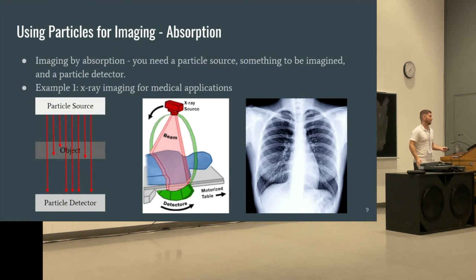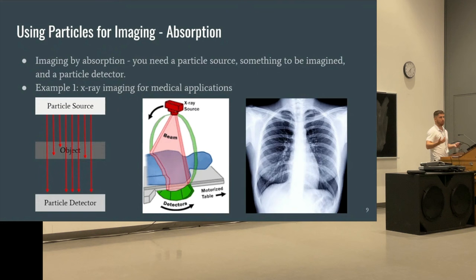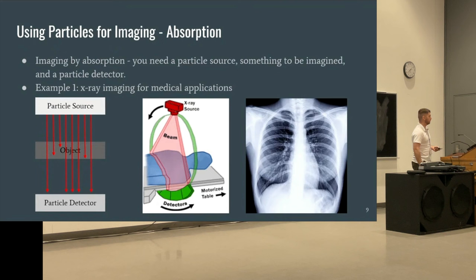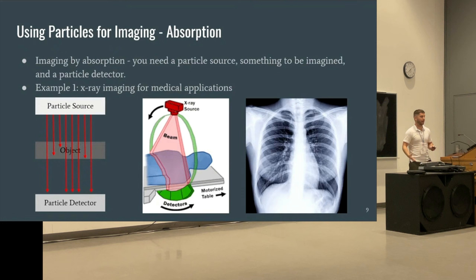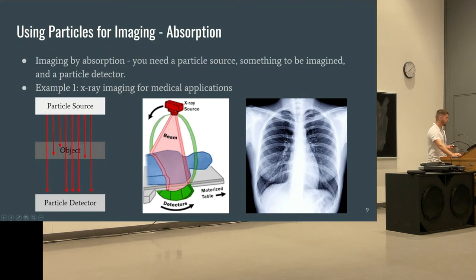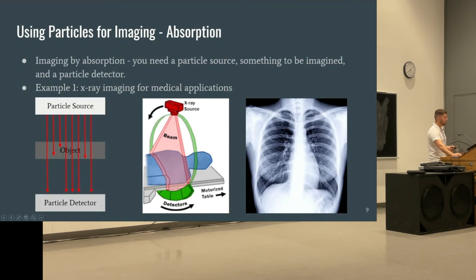Now I'll describe how we actually use muons for imaging. The concept is imaging from absorption, which is quite simple: you need a particle source, an object of interest, and a particle detector. That object will absorb some particles and let others through, and the number absorbed depends on the object's size and density. We're all familiar with this from medical applications — an x-ray, basically a mini particle accelerator, shoots x-rays at a person. Bones are denser so they absorb more x-rays, tissue transmits more, and a detector reveals the internal structure.